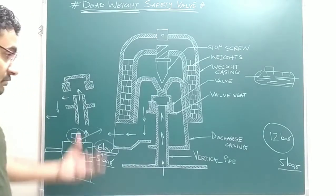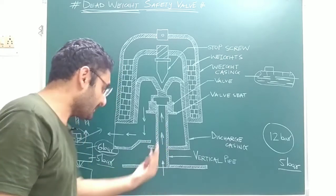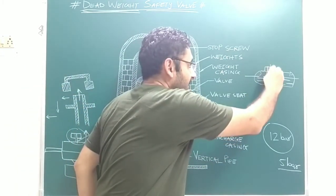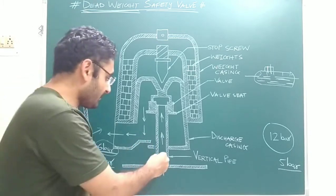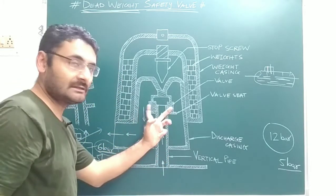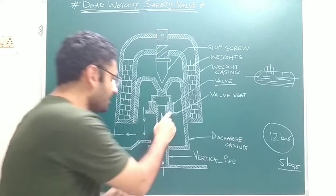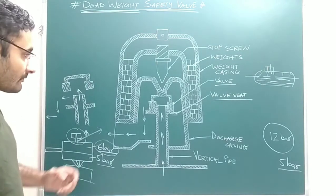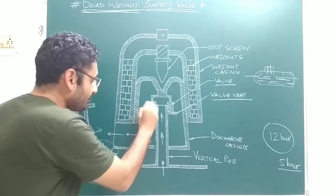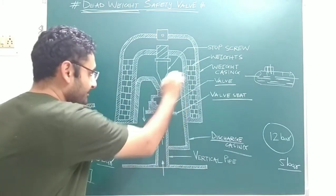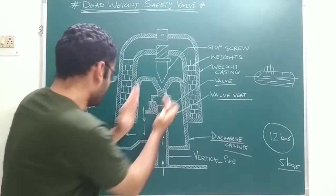Similarly, we will now discuss the construction. In construction, first you can say that it has one vertical pipe. From this vertical pipe, since it is mounted on the boiler, steam will enter inside this mounting. That vertical pipe is connected with two valves — the first valve and the second valve — and both valves are present on the valve seat. These two valve seats are present inside one discharge casing.